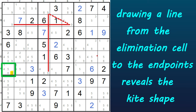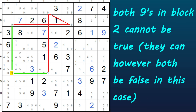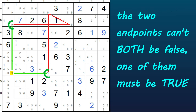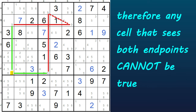If I draw a line from that cell to each of the endpoints, we can see the kite shape more easily. Why does this work? Because both 9s meet in the same block, and you can only have one 9 in a block, so we know that both of these two 9s in block 2 can't be true at the same time. So these two ends can't both be false — therefore one of the endpoints has to be true. If they didn't meet in the same block, both of these endpoints could be false, but since they do meet in the same block, one of them has to be true, and so any cell that sees both cannot also be true. There will always be only one cell that sees both and is not in the same block, and that cell is at the intersection of the row and the column. One of the intersections will be in the block, so that doesn't help us, but the other intersection will be outside the block, and that will always be the elimination cell.